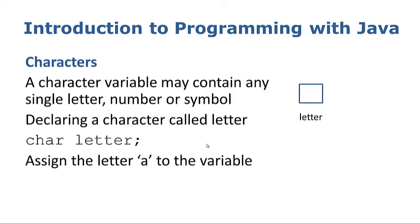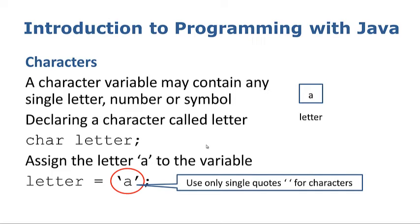To assign the letter A to that variable we would use the code letter equals 'A'. That takes the A and puts it inside the letter variable. Note here that we are using only single quotes around the letter A because it is one single character, whereas when we assign values to strings we use double quotes. Be careful of that when you are using characters.